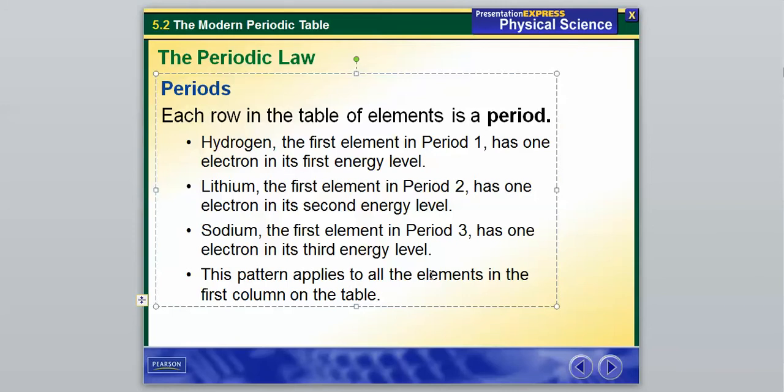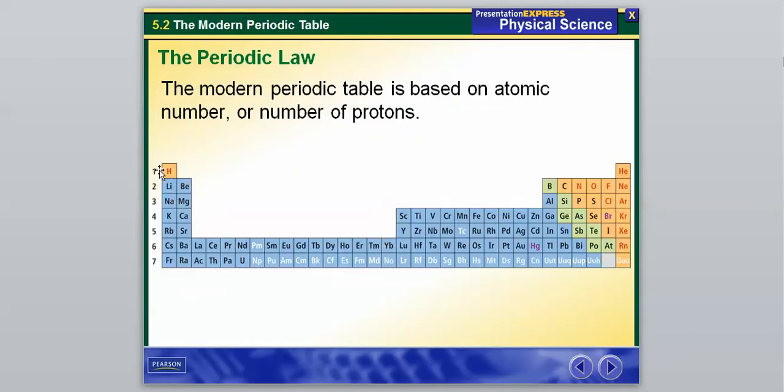So towards the very end of our last chapter, we talked about how the electrons exist in different energy levels. So if we go back here, these are our periods. So every element in this period has one electron in its first energy level. Again, lithium is our second period right here. So lithium, beryllium, all the way over here to boron, carbon, nitrogen, oxygen, fluorine, and neon. Those are all in our second period.